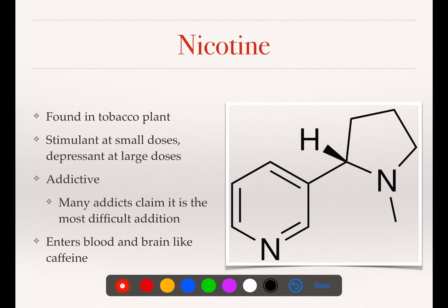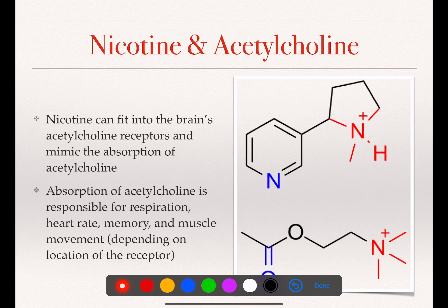Nicotine — not quite so easy. Here's the structure of the nicotine molecule. This is also a natural product; it comes from the tobacco plant. In small doses, it's a stimulant, and interestingly, in large doses, nicotine is actually a depressant. Nicotine is well-known to be addictive, and people with nicotine addiction often say it is the most difficult addiction. Nicotine is always very high, if not number one, on lists ranking addictiveness of various substances. Nicotine goes into our bloodstream and then into our brain, just like caffeine, and it acts in our brain similarly to caffeine. Nicotine mimics a molecule called acetylcholine.